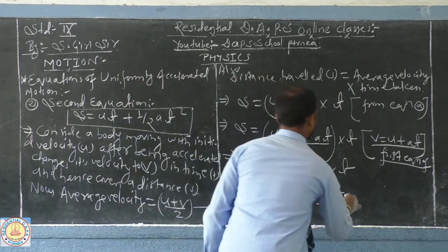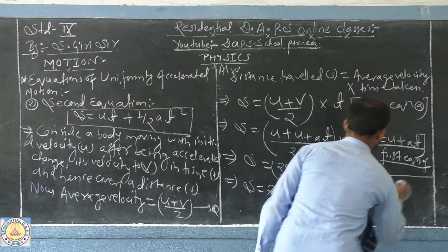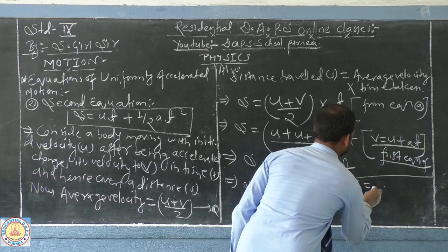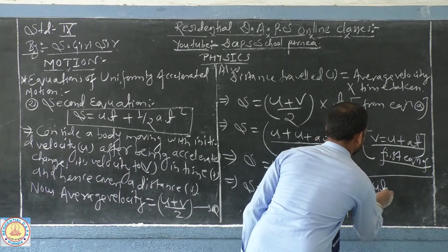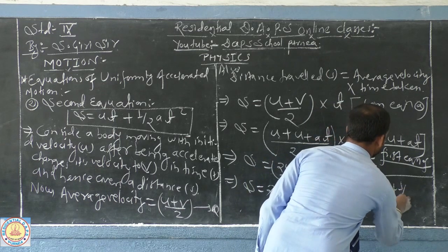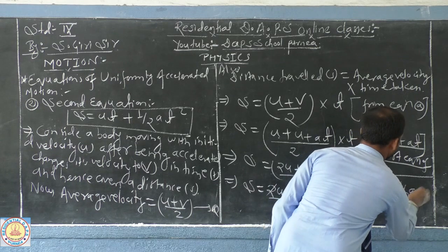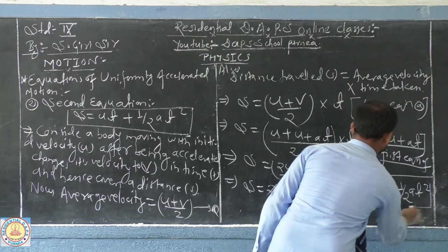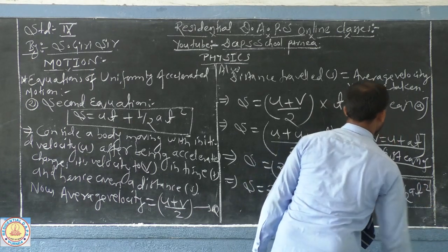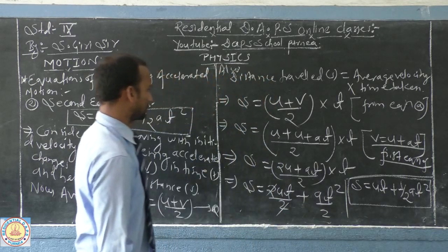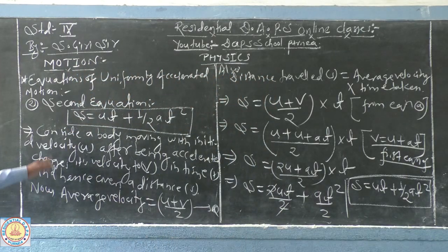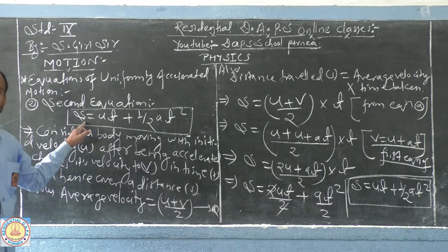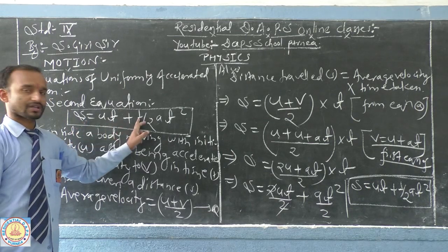And finally, here we get s equal to u t plus half a t square. Now, this is the required equation. Let me repeat once again how to derive the second equation s equal to u t plus half a t square.